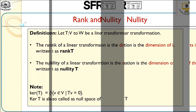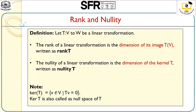Let us enter into the content. Let us see what is rank. Its definition is: we define a transformation T from the vector space V to W. The rank of the linear transformation is defined as the dimension of its image T of V. We have to find the image set for every element of V belonging to V. That collection we first have to estimate, then the dimension of that collection is indicated as rank T, denoted as rank T.